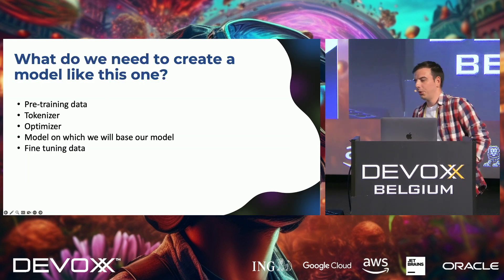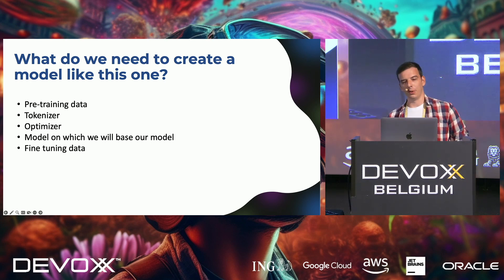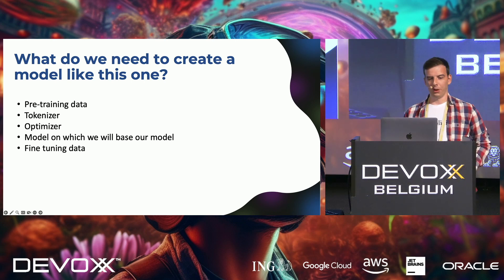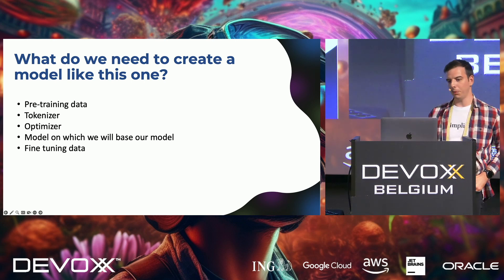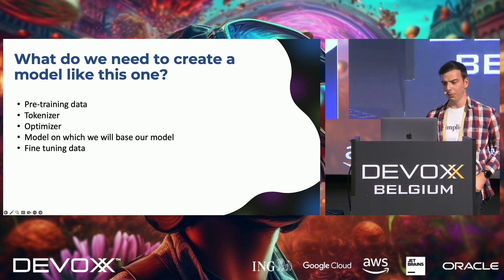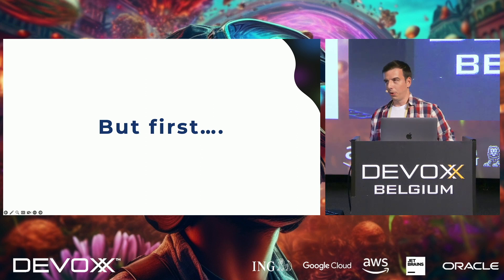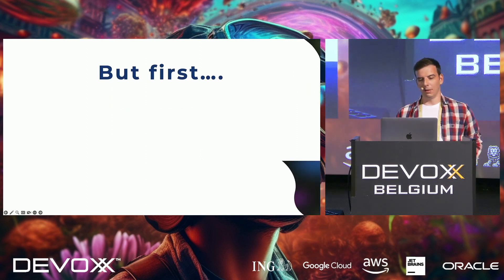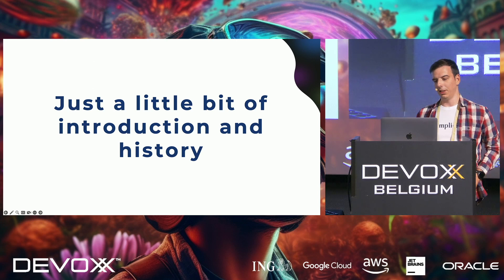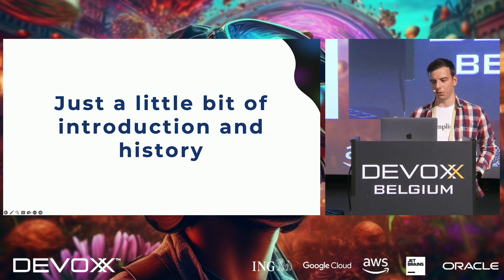So what do we actually need to create a model like this? We need pre-training data — and a lot of it. We need a tokenizer, an optimizer, and most importantly, a base model on which we'll build our own. And for fine-tuning, we of course need fine-tuning data. Before we go to training, I'll give just a little bit of history. I won't talk much about that — I'll focus mostly on training.